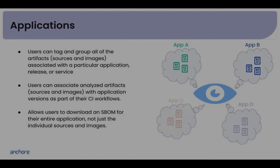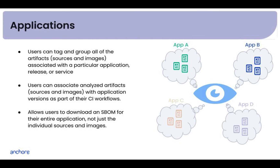Now we'll jump into applications. This new feature lets users tag and group all of the artifacts associated with their particular application, release, or service. Then you can generate reports based on vulnerabilities and risks associated with that specific application, and also monitor each application release for new vulnerabilities that may arise. This is super helpful in the event of a zero day, or any new vulnerability really, because it lets you quickly identify which of your applications are affected and prioritize those for remediation.